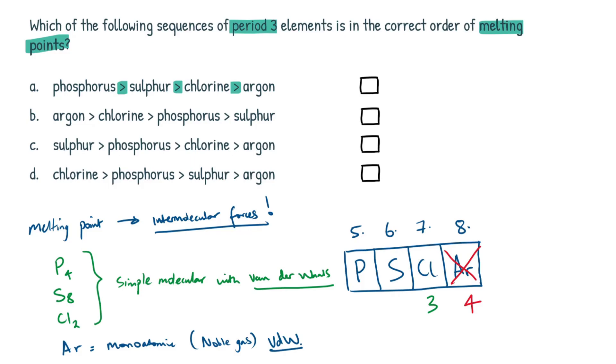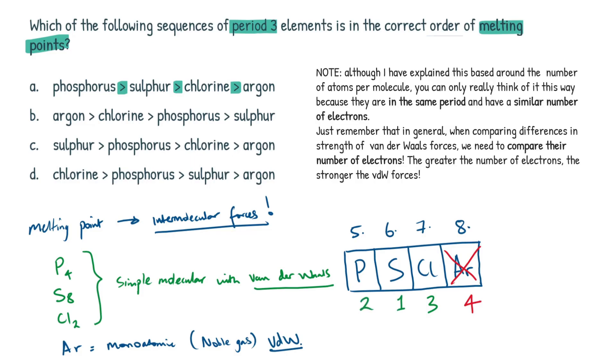Next up is going to be sulfur. This is actually our highest, and then phosphorus is going to be our second highest. And this is because there's eight atoms of sulfur in one molecule of sulfur, and four atoms of phosphorus in one molecule of phosphorus. I hope that makes sense.